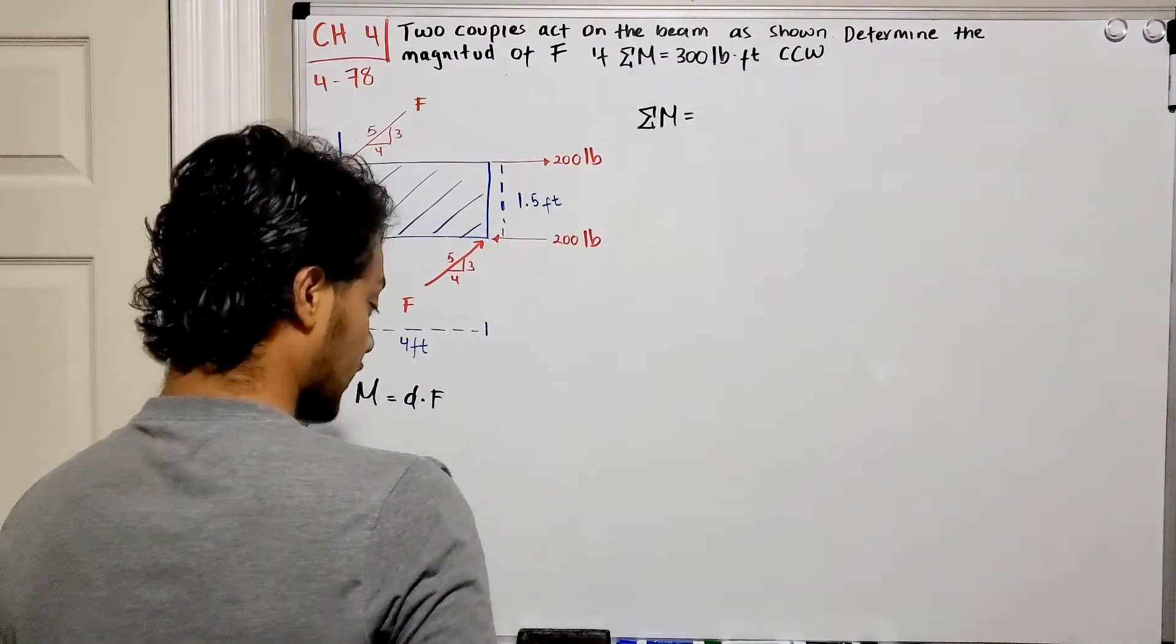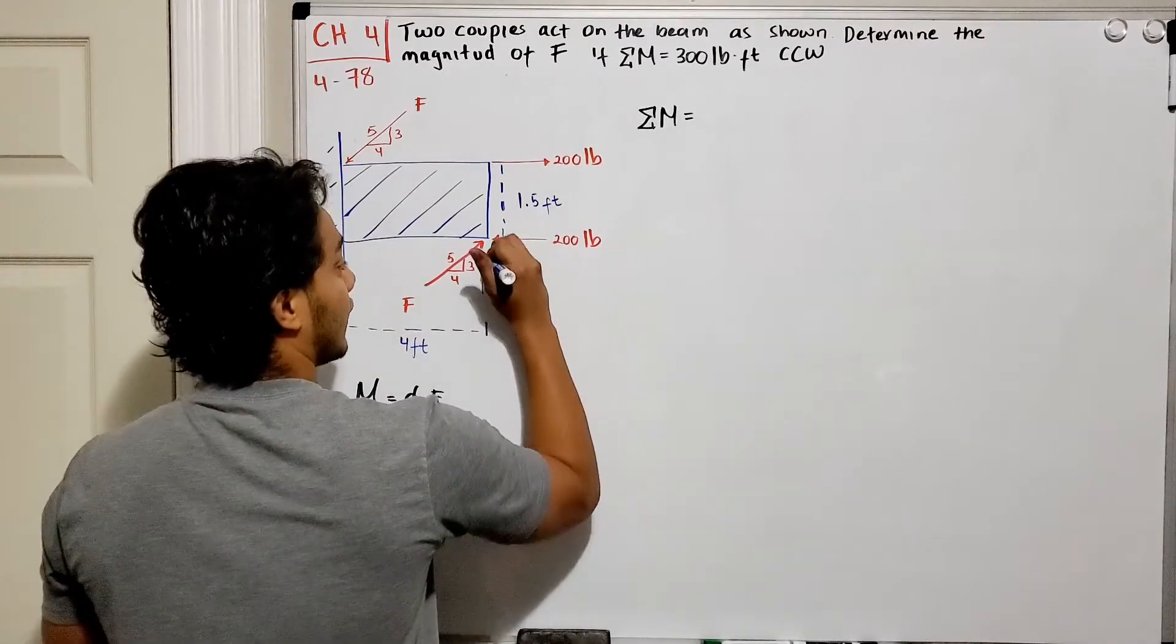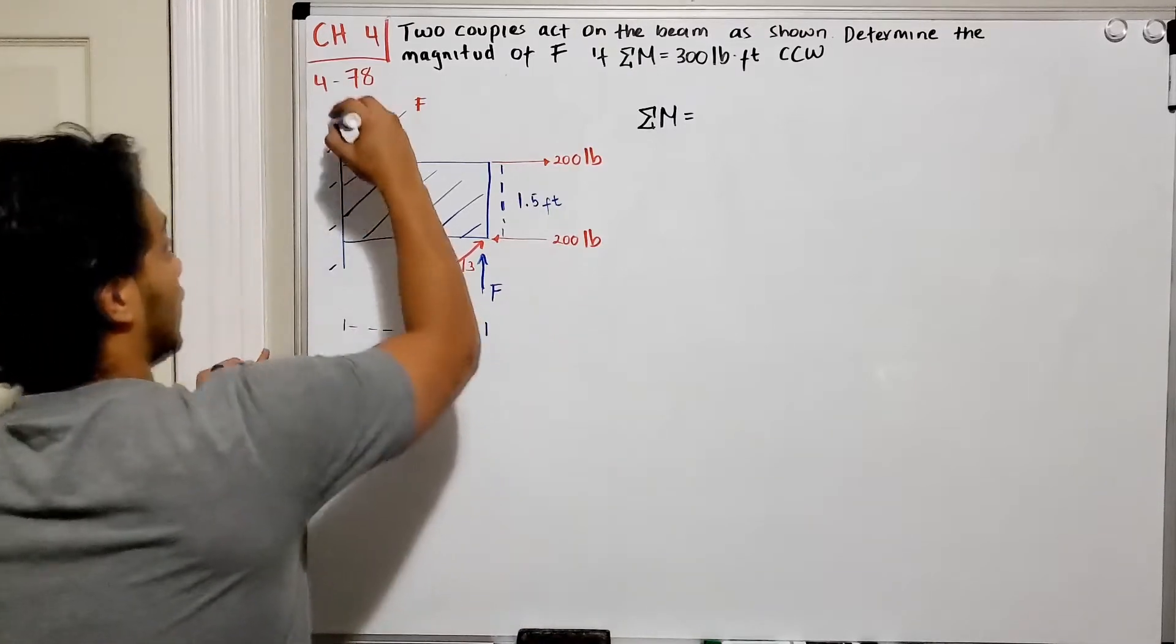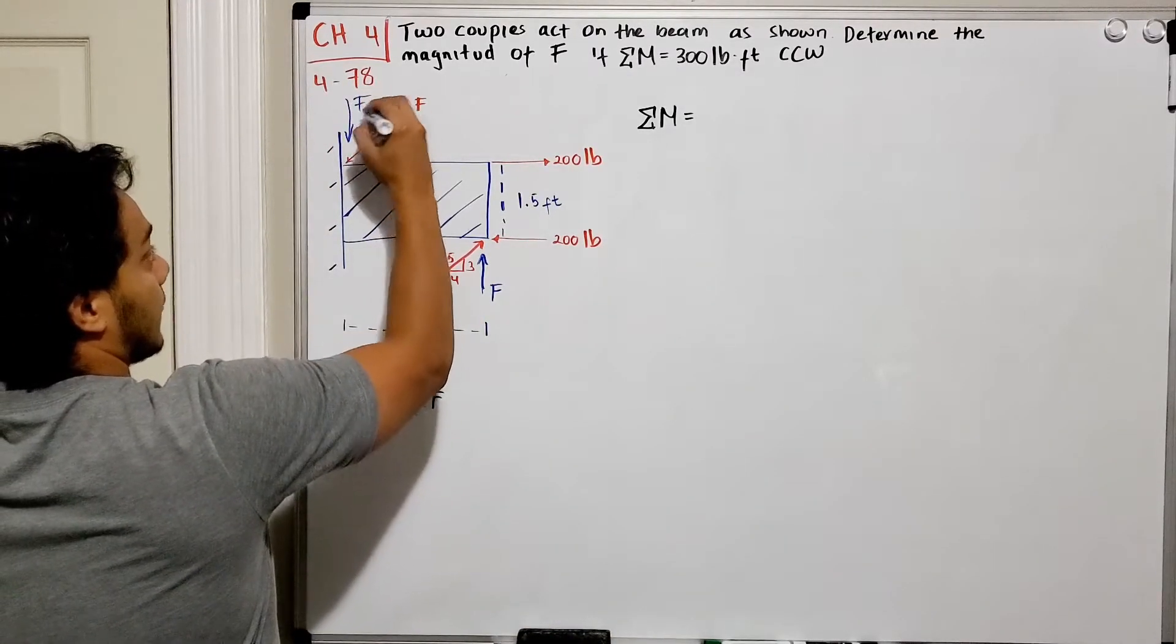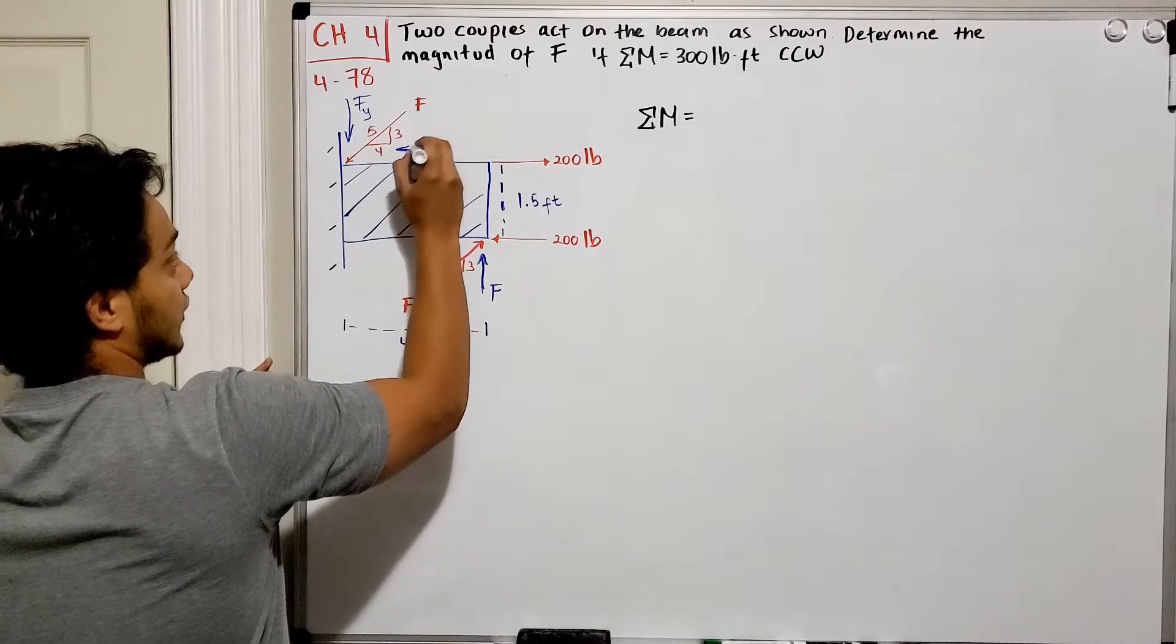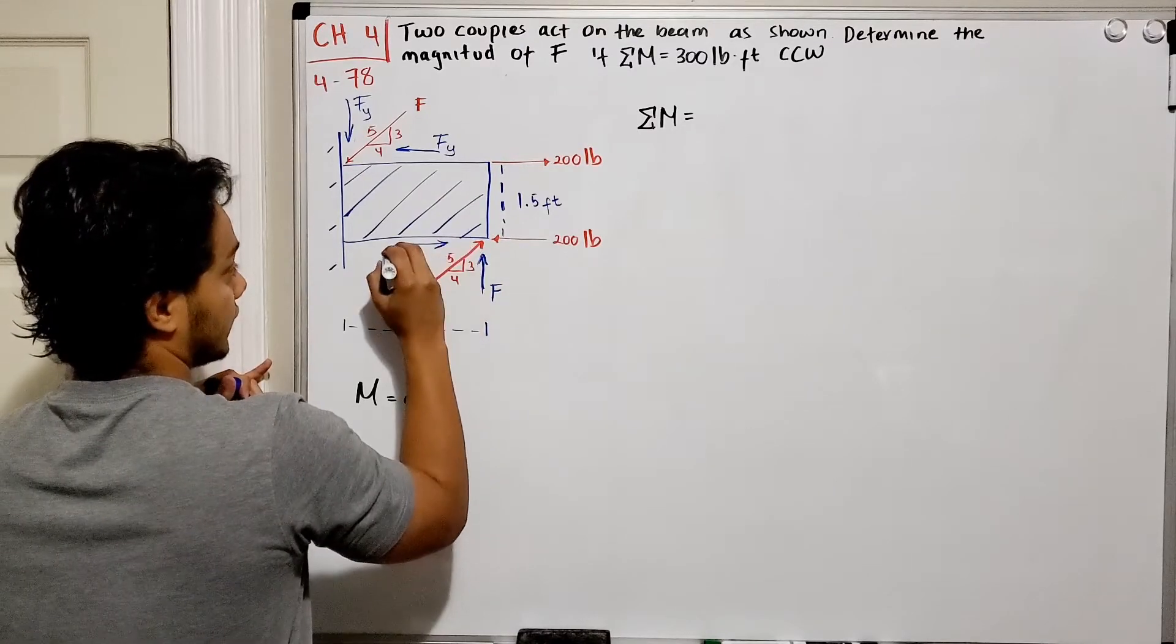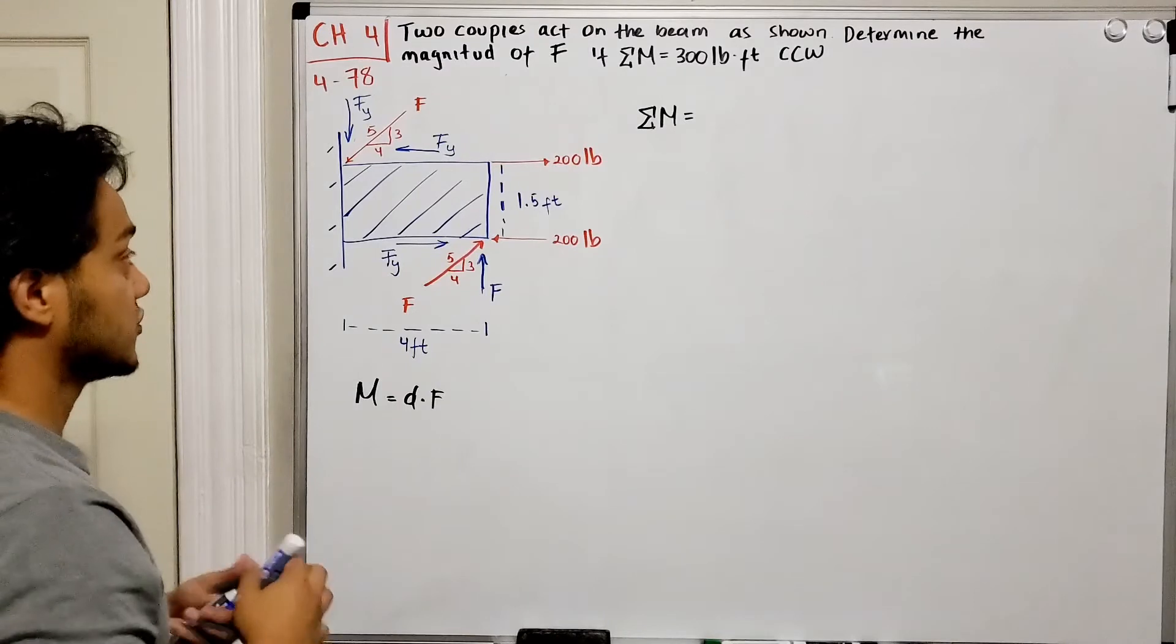So I'll have an F_y going up in here and I'll have an F_y going down in here. I'll also have an F_x going to the left in this case and an F_x going to the right. They're the same but opposite, same magnitude opposite direction.